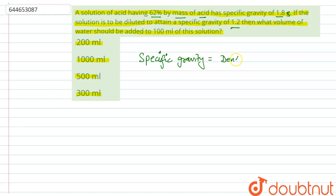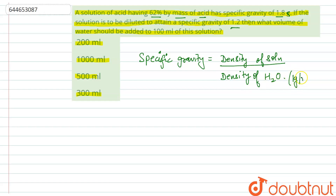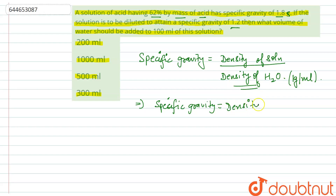Specific gravity is equal to the density of solution divided by the density of water. We know that the density of water equals 1 gram per milliliter, so specific gravity equals the density of the solution. Also, we know that density equals mass divided by volume.